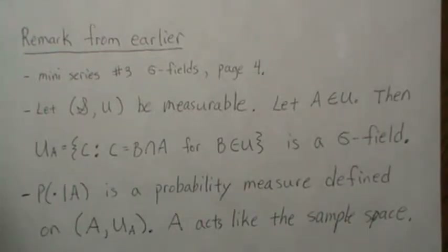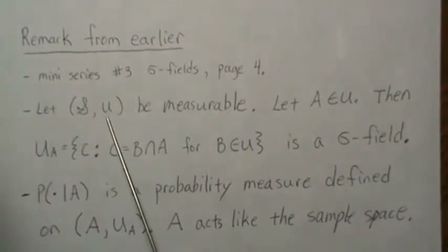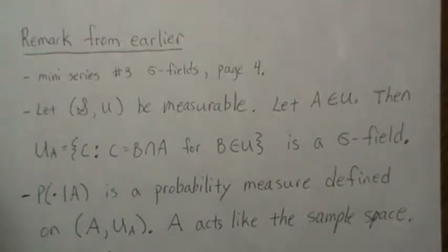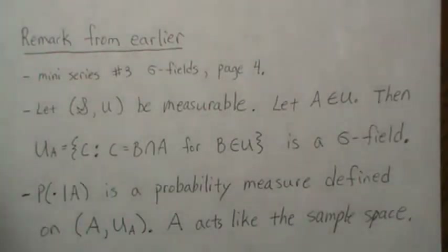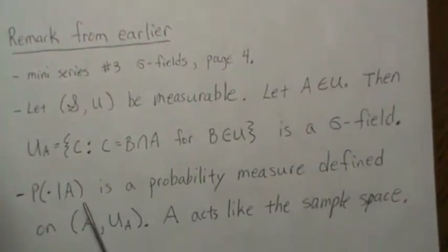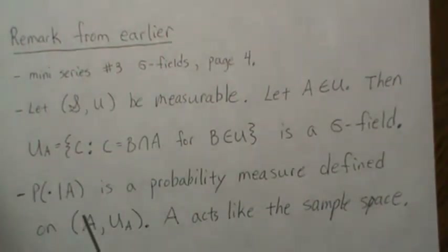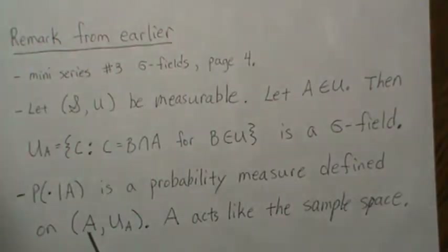You could argue it's really the original space, but there's a bijection between these two spaces so they're essentially the same. The way you should think about it: given A, the event A happened, so that's our new sample space. U_A is the sigma field associated with that new sample space, and conditional probability acts upon that measurable space.